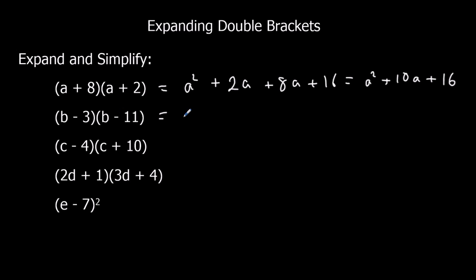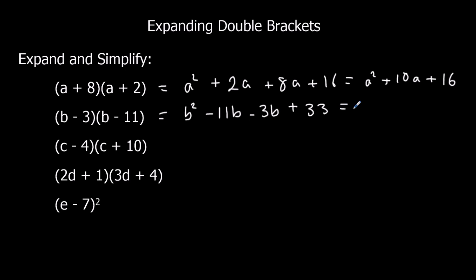Next: b times b is b squared. b times minus 11 is minus 11b. Minus 3 times b is minus 3b. And a negative times a negative is a positive — 3 times 11 is 33, so plus 33. Simplifying: minus 11 minus 3 is minus 14. So the final answer is b squared minus 14b plus 33.